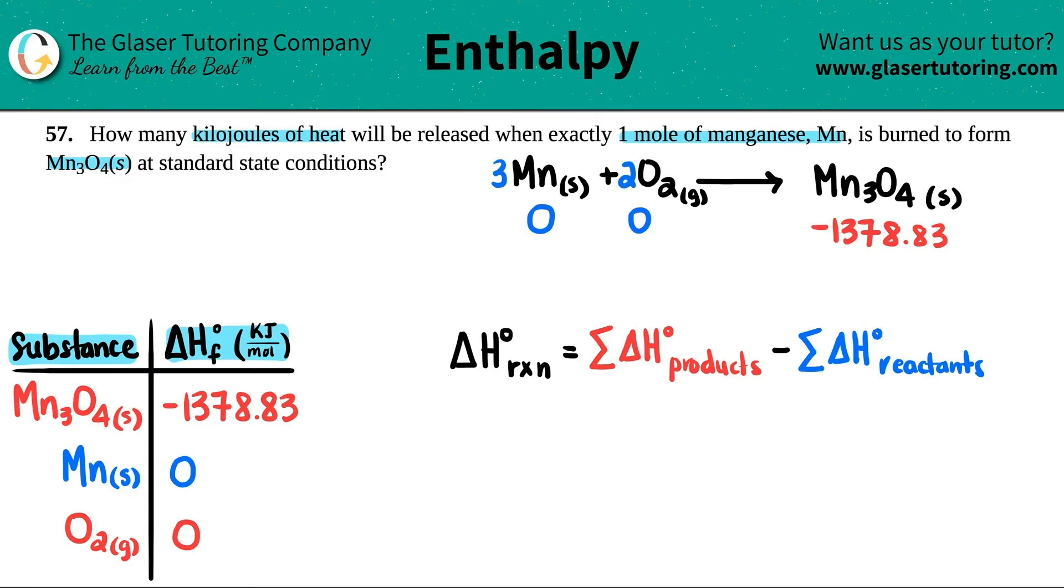We just have to find the sum. Technically what we have to do is for every number you have to multiply it by how many you have in your balanced equation. For manganese you have three of them, so technically this should be multiplied by three. Since you have two oxygens, technically this should be multiplied by two. Since you only have one of these, you don't have to do anything with this. You're going to add the two of these together. Three times zero plus two times zero is a total of zero.